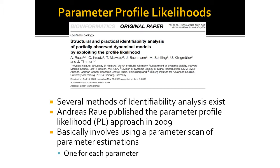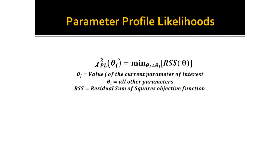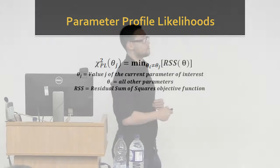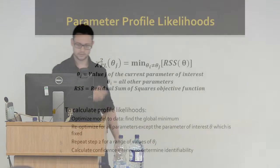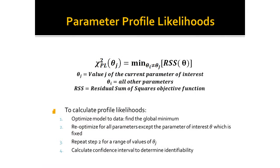Mathematically, you minimize the residual sum of squares objective function for all parameters except your parameter of interest. To reiterate: you optimize your model to the data, find the global minimum — or what you think is the global minimum — then re-optimize all other parameters except your parameter of interest, repeat that for a range of parameter values, and then calculate the confidence intervals.